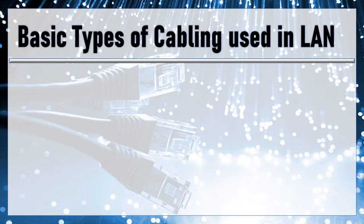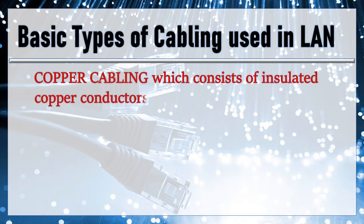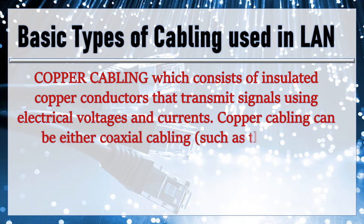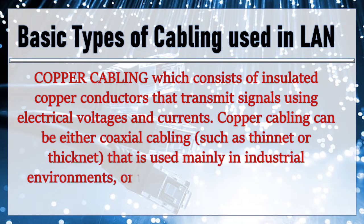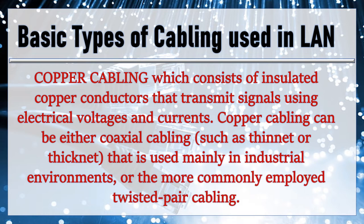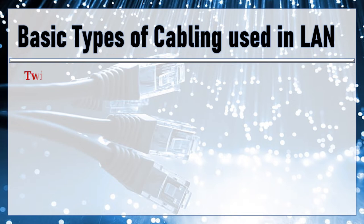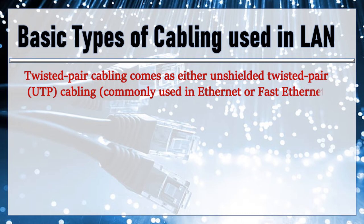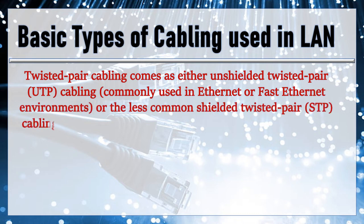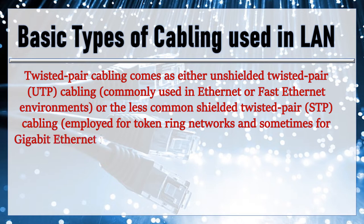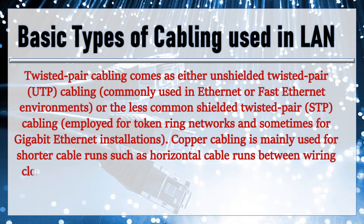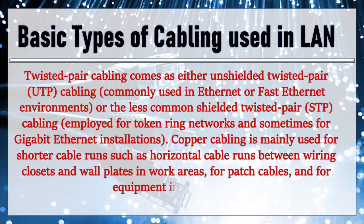There are two basic types of cabling used in LAN. First is copper cabling, which consists of insulated copper conductors that transmit signals using electrical voltages and currents. Copper cabling can be either coaxial cabling, such as thinnet or thicknet, used mainly in industrial environments, or the more commonly employed twisted pair cabling. Twisted pair cabling comes as either unshielded twisted pair, UTP, commonly used in Ethernet or Fast Ethernet environments, or the less common shielded twisted pair, STP. Copper cabling is mainly used for shorter cable runs such as horizontal runs between wiring closets and wall plates in work areas, for patch cables, and for equipment interconnects.